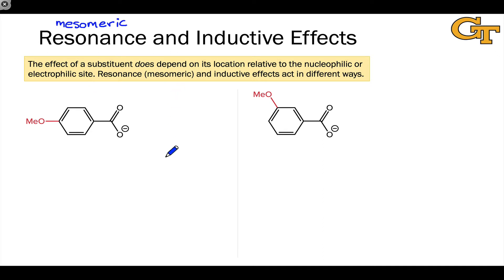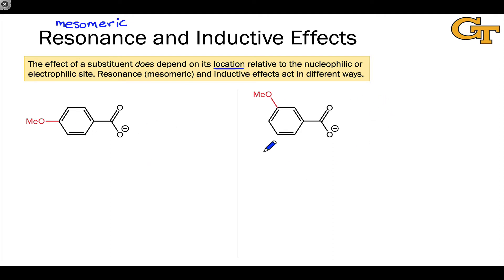Resonance and inductive effects operate in different ways depending on the location of the substituent relative to a reactive center — relative to the nucleophilic or electrophilic sites. To show this off, I wanted to highlight these two benzoate anions. We're going to dig into benzoates in the next video in detail, because ionization of benzoic acids — deprotonation of the carboxylic acid group — is really the foundation of the Hammett substituent constant idea. So we'll see molecules like this a little bit later, but they highlight beautifully this difference between resonance and inductive effects.